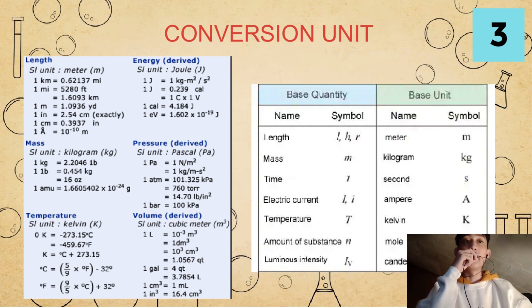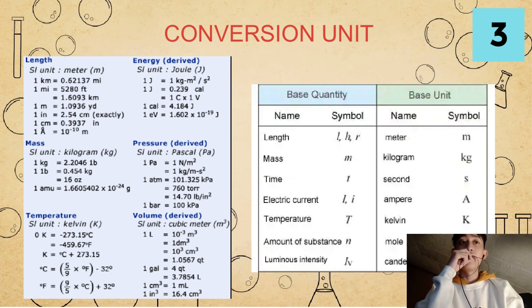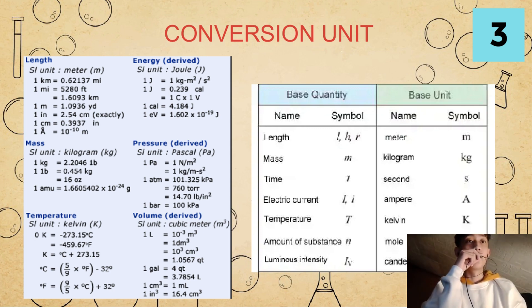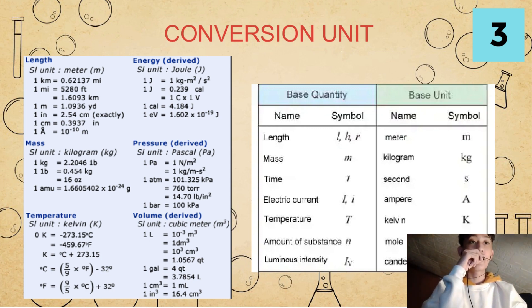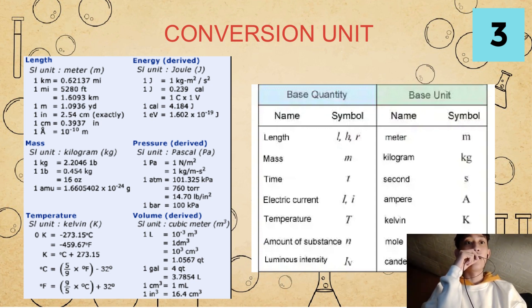For our base units, in every base unit there is also a symbol. For meter, small letter m. Kilogram, small letter kg. Second, small letter s. Ampere, big letter A. Kelvin, big letter K. Mole is small letter mol. Candela is small letter cd.